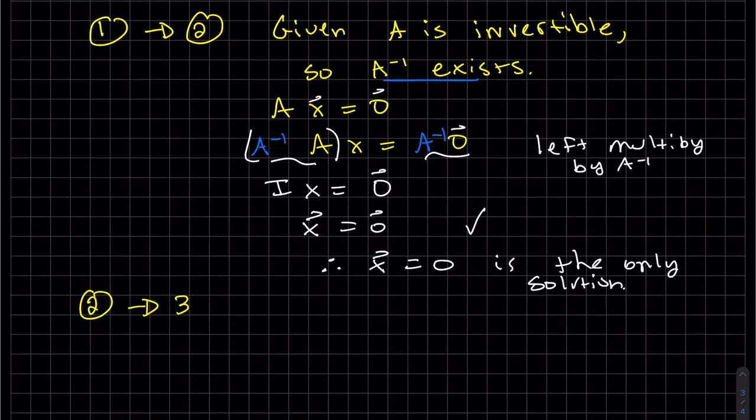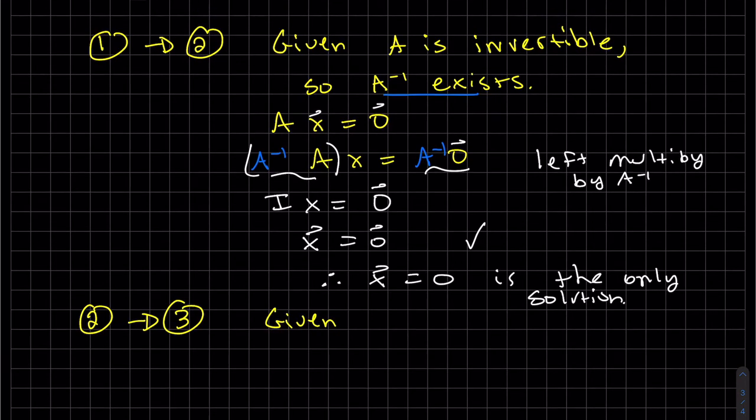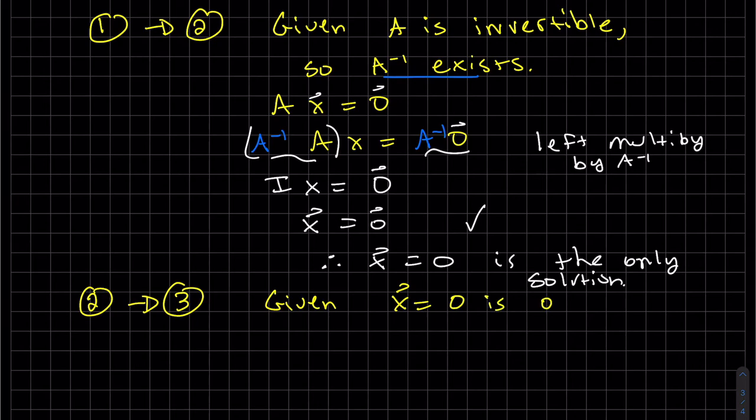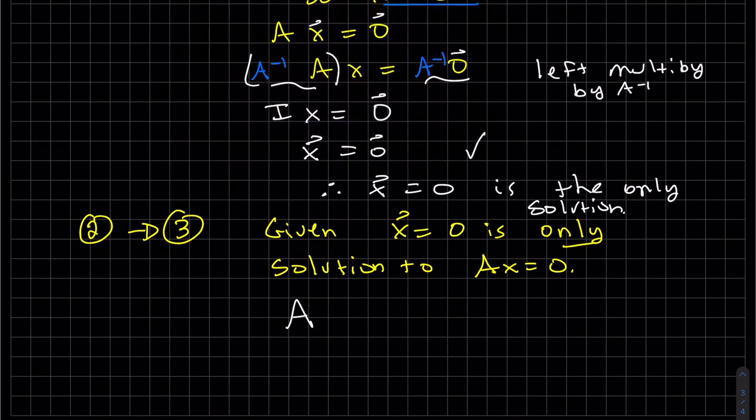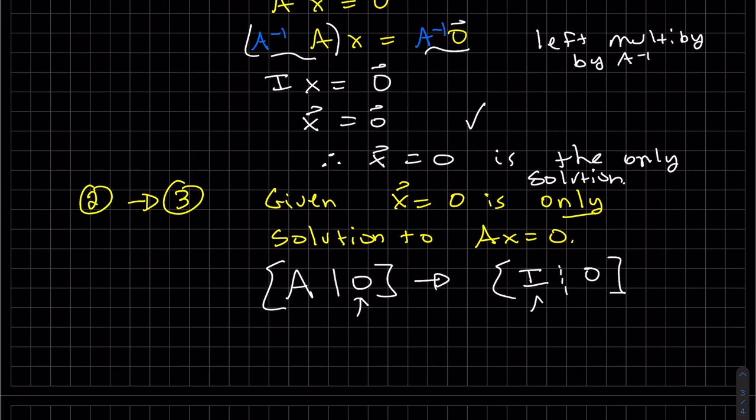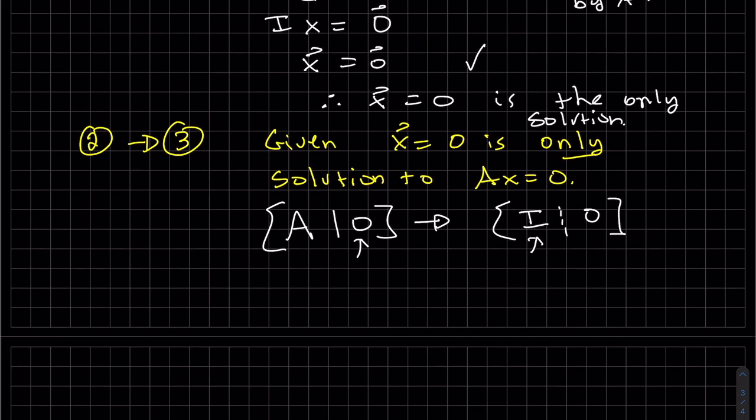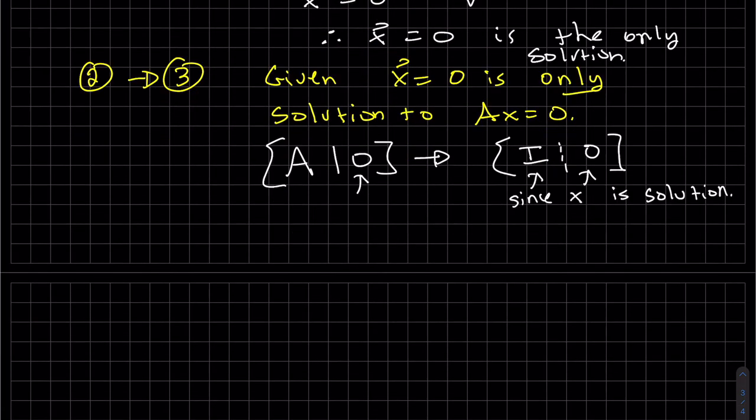Two implies three. So we're given two, the one that we just proved. X equals zero is only solution. So let's write this in augmented form. Well, when you row reduce this form, that always stays zero. We know that. When we get the solution is zero, that means this has to row reduce to I. We can write it out in equations so you can see it better. But this is true. That has to be zero since x is the solution given. And it has to be zero because each individual one has to be zero in order for it to be zero there. So therefore, I is, okay.